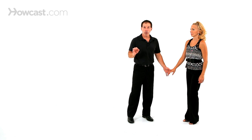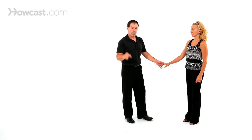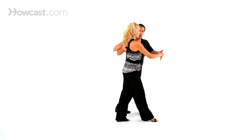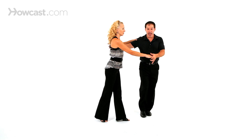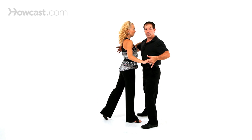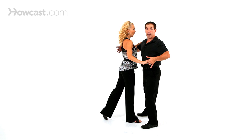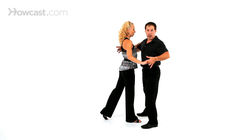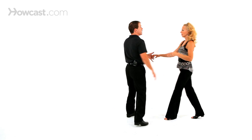On three and four, Nicola's doing what's called a coaster step. That means back together forward. A coaster step is back together forward. So she goes one, two, coaster is the back together forward, back together forward. So she's forward on her right, I'm on my left. From here we go five, six, seven and eight.